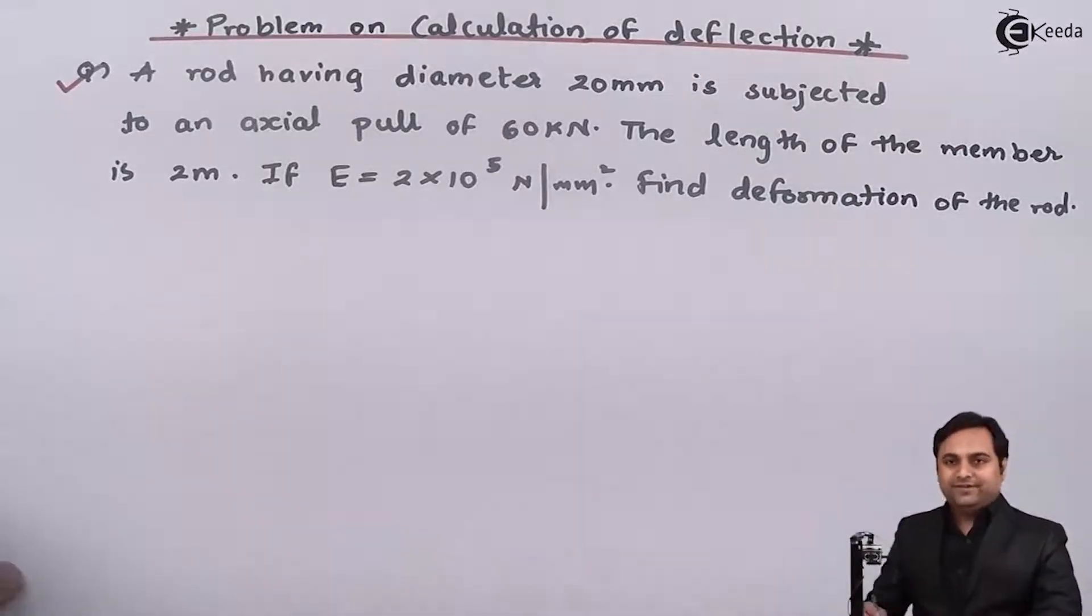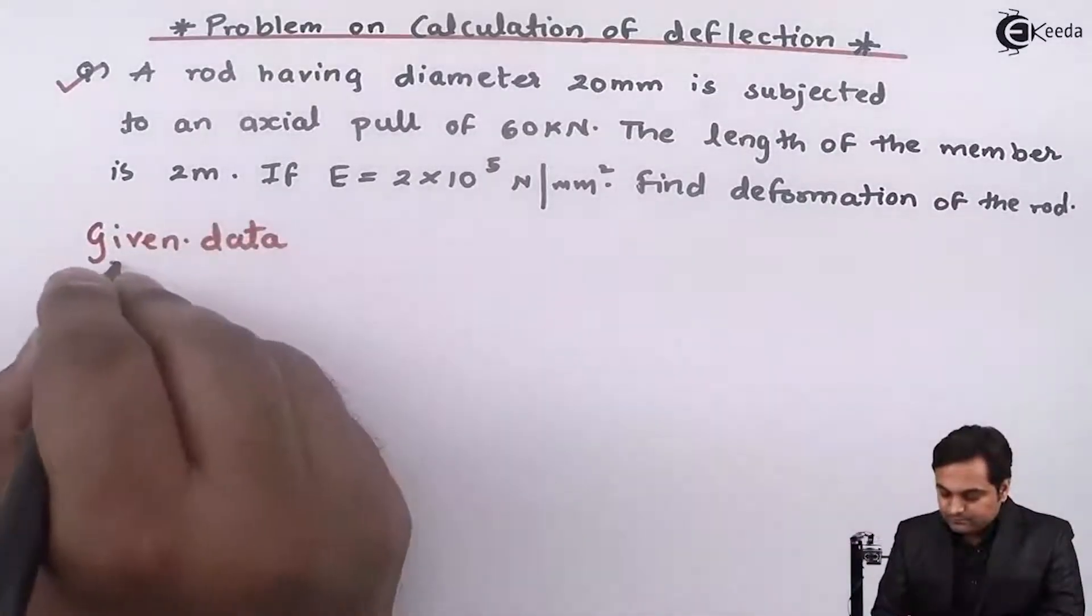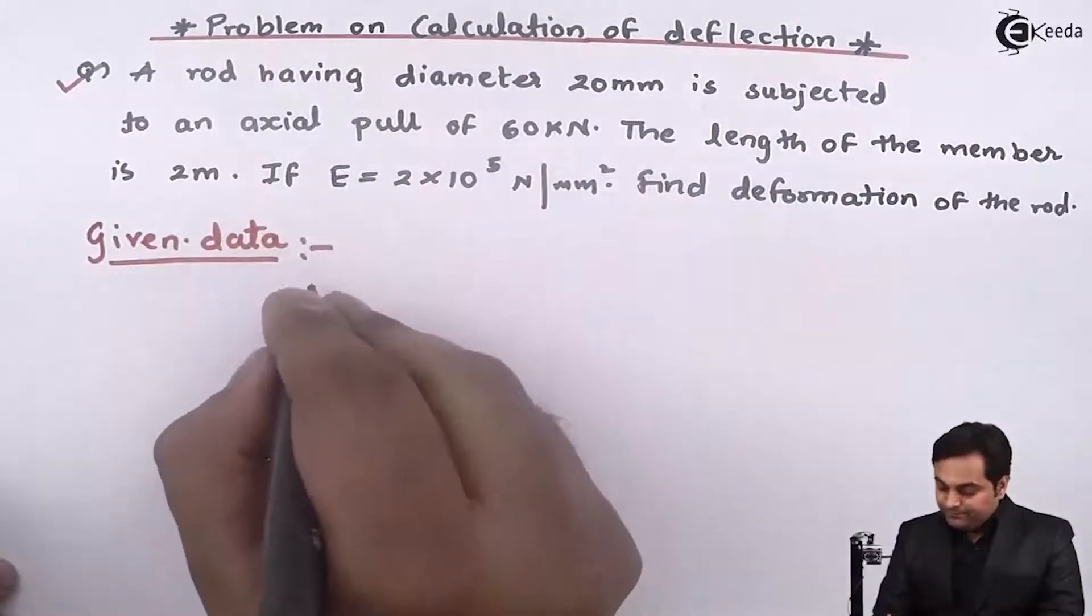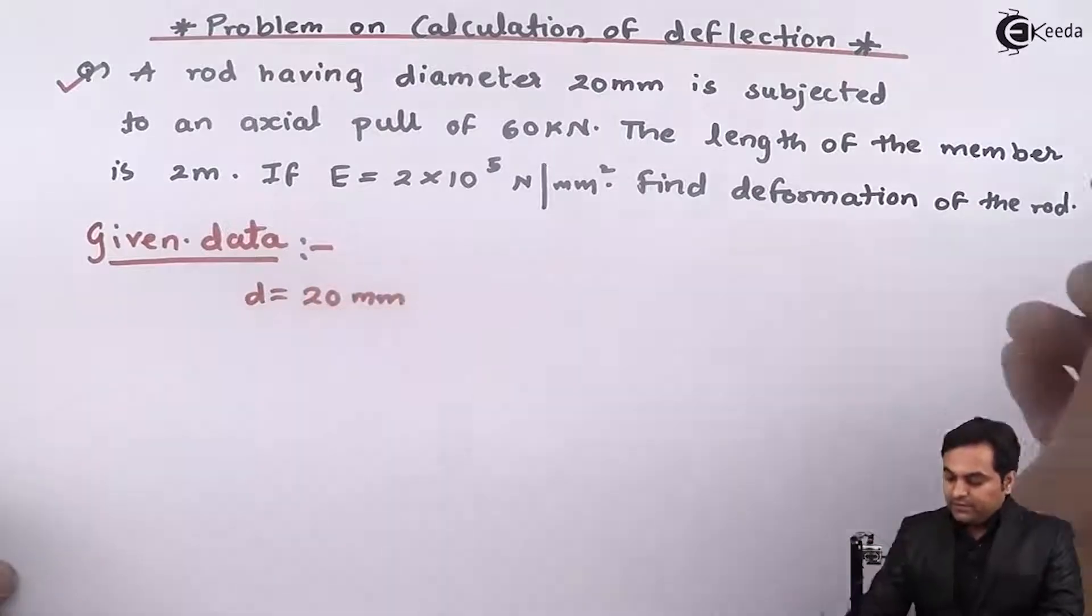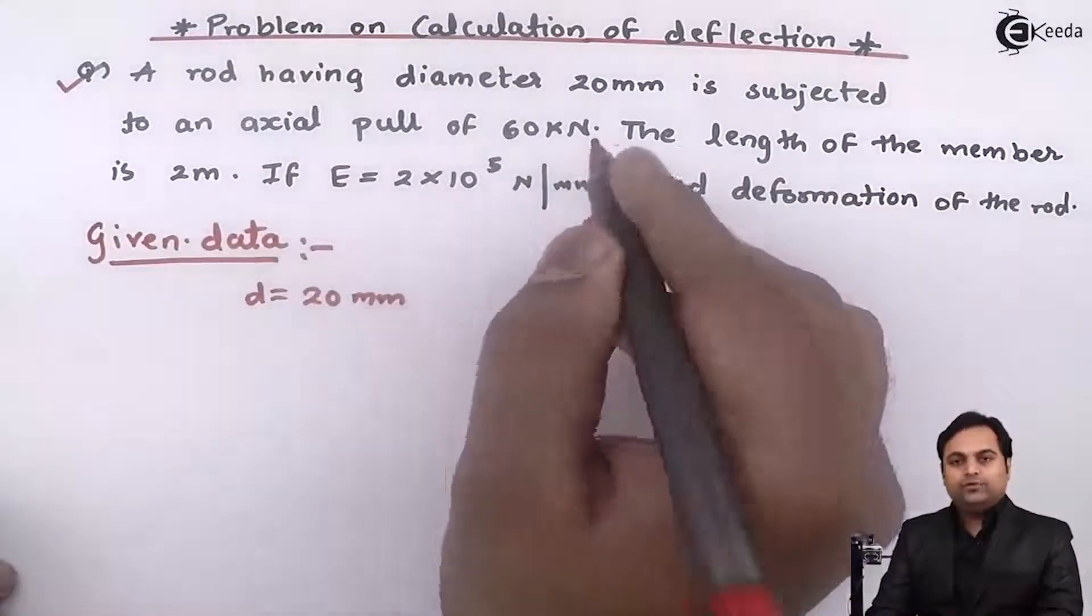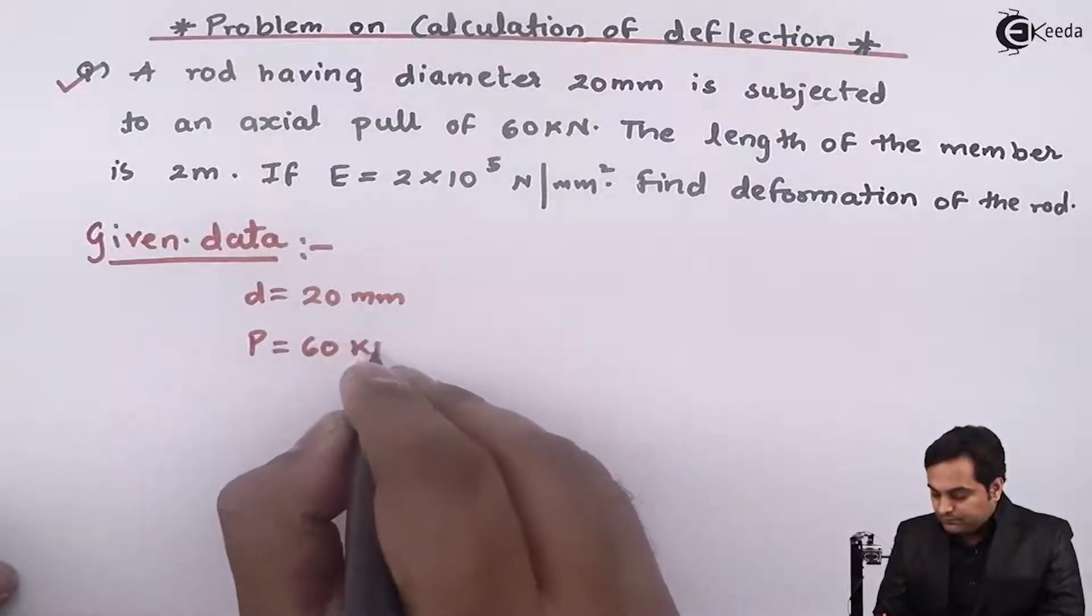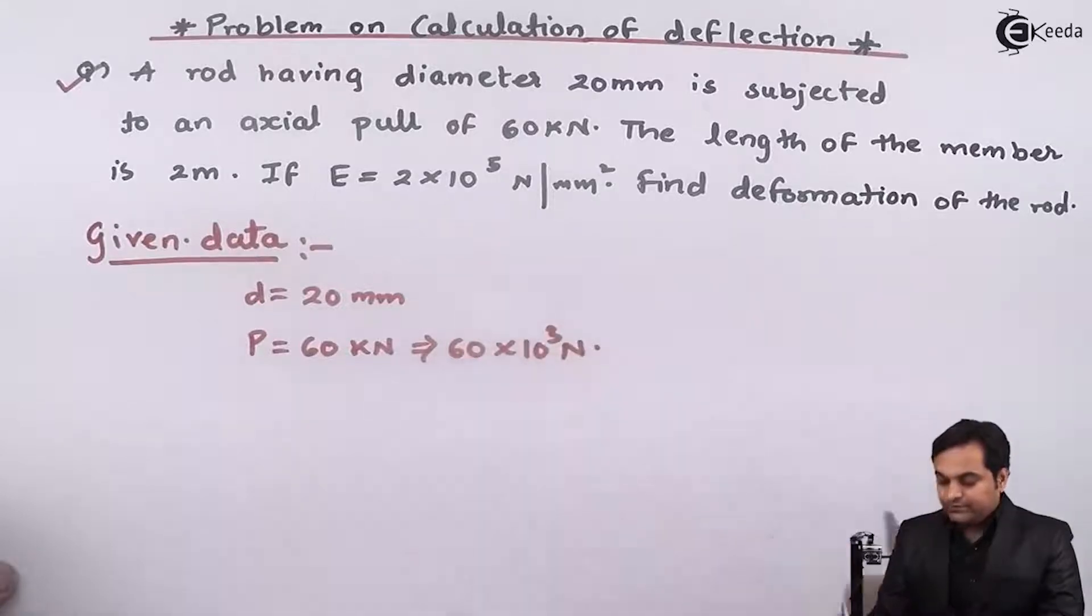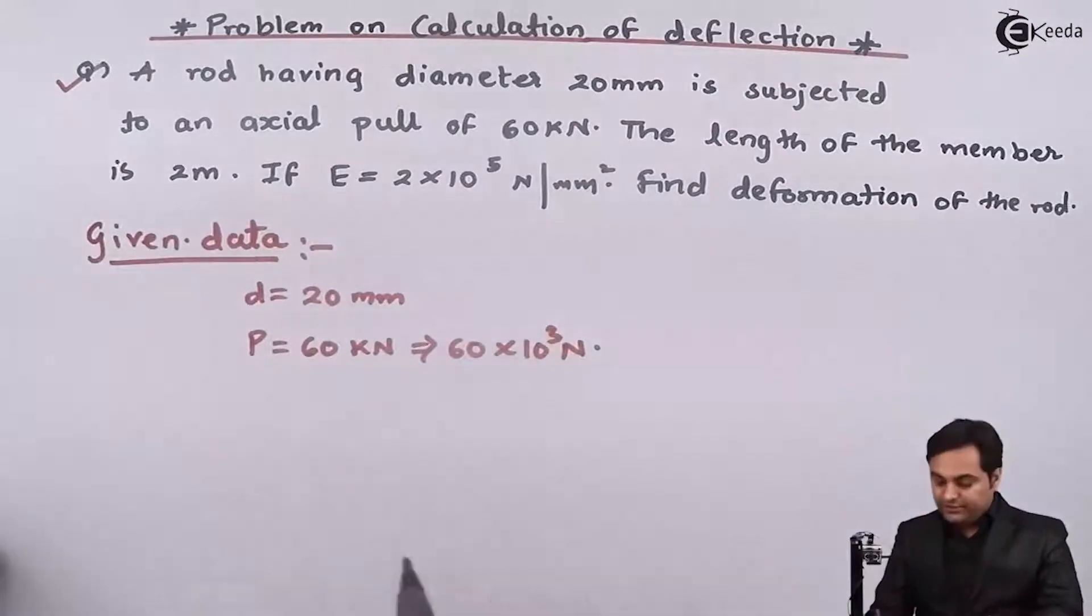I'll write the data. A rod having diameter 20 mm, d is 20 mm, is subjected to an axial pull of 60 kilonewton, so it is 60 into 10 raise to 3 Newton. Next, the length of the member is 2 meters.